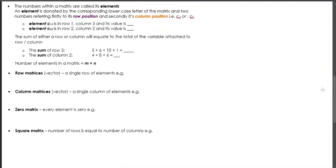So the numbers within a matrix, these are called elements. An element is donated by the corresponding lowercase letter of the matrix and two numbers referring firstly to its row position and then secondly to its column position. So this is a bit small so I'll put this up.